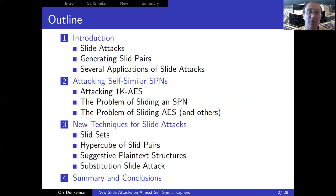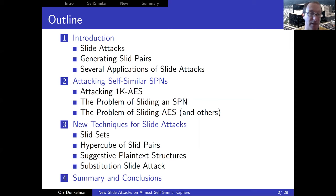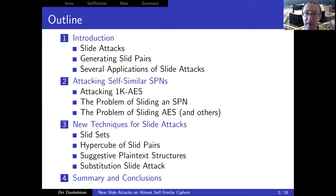Then we're going to discuss how to attack self-similar SP networks, and specifically we'll start with 1K AES, which is a generalization of AES with an infinite number of rounds, where the same subkey is used in all the rounds. We'll see a Baron et al. attack from 2018, how to break such a cipher.